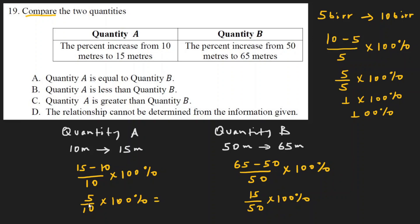For quantity B: 15 divided by 50, times 100. 15 times 100 equals 1500, divided by 50 equals 30. So quantity B is 30 percent. Therefore, quantity A is 50 percent and quantity B is 30 percent.